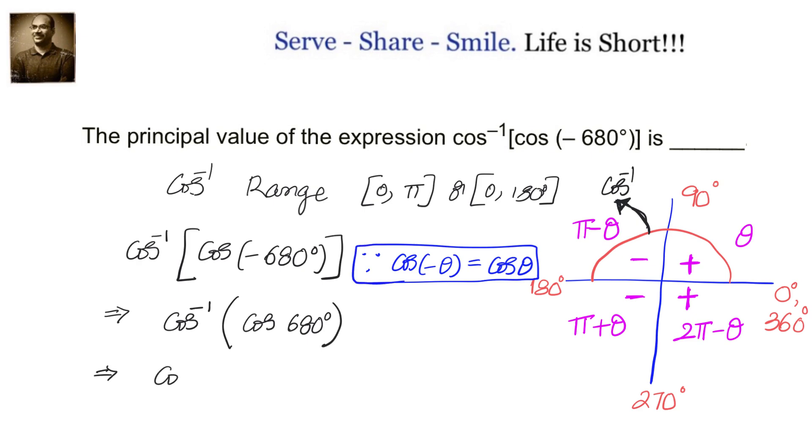Because cos of 2 pi plus theta is cos theta only. So cos inverse cos of 320 degrees, because 360 degrees will complete one revolution. We are again back to 0, 0 to 320 degrees.